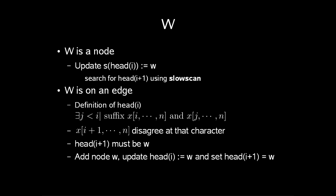Now that we know w is in our t(i), we need to know what if w is a node. Well, we start by updating s of head(i) to be equal to w. Then we search for head(i+1) using slow scan.